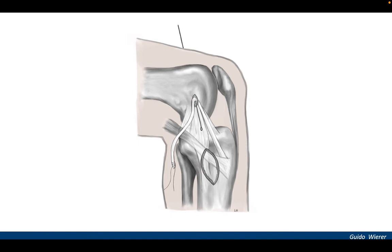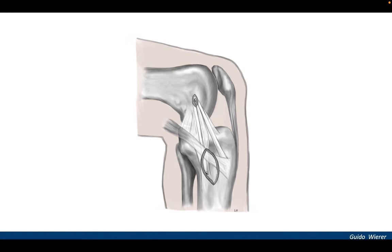The gracilis tendon is shuttled proximally deep to the fascia and wrapped around the femoral bone pin for isometry testing. After femoral fixation, the free end of the gracilis tendon is retrieved distally deep to the fascia. Tibial fixation is performed at the center of the distal tibial insertion of the superficial MCL in 20 degrees of knee flexion and neutral rotation.